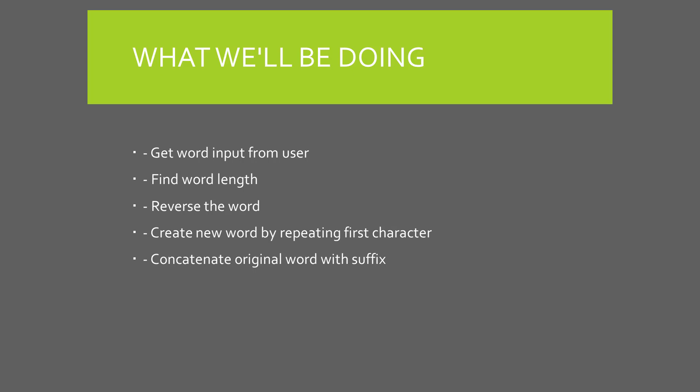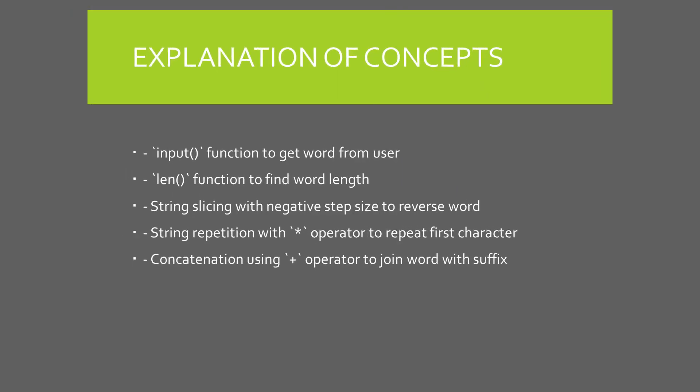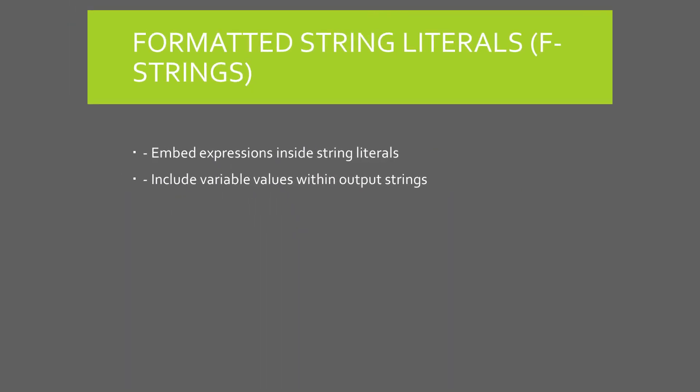We'll be doing the following: getting a word input from the user, finding the length of the word, reversing the word, and creating a new word by repeating the first character and concatenating the original word with a suffix. We'll use the input function to get a word from the user, the len function to find the length, string slicing with a negative step size to reverse the word, and the asterisk operator for string repetition. Concatenation will be demonstrated by joining the original word with the suffix using the plus operator.